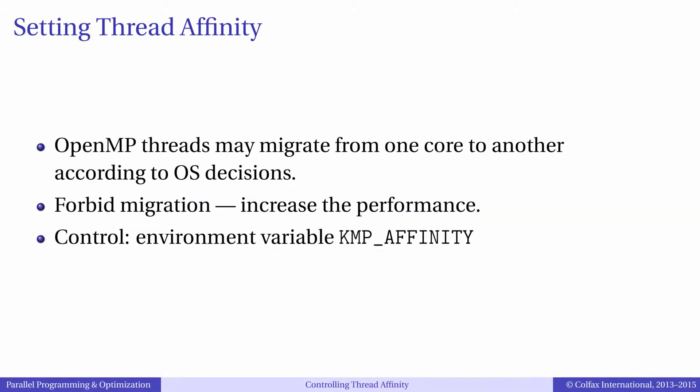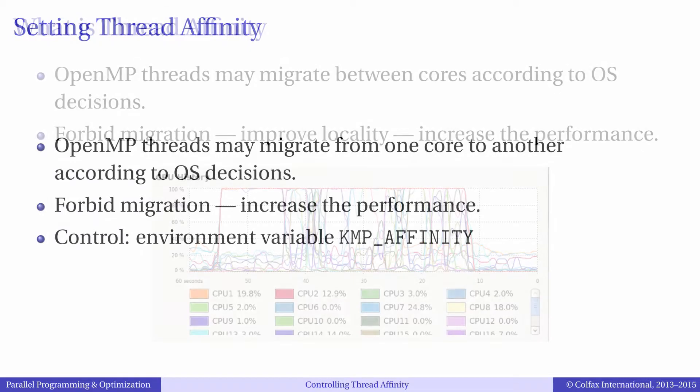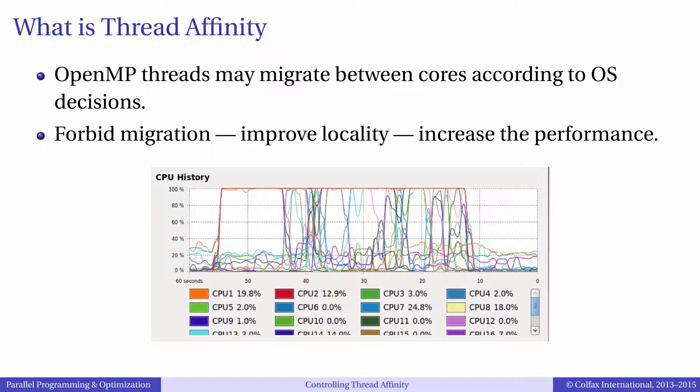However, by default threads are not bound to any specific cores. Furthermore, the operating system may command threads to move to different cores. While this migration of threads may be good behavior for threads in service applications, it is bad for computing applications. That is because computing applications are sensitive to data locality, and when a thread migrates from one core to another, it loses the cached data it was working on and this data must be read from memory again.